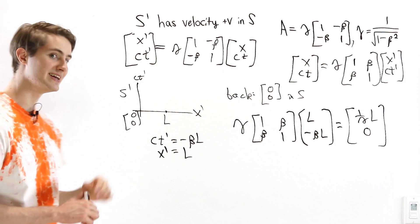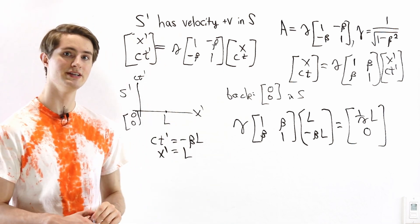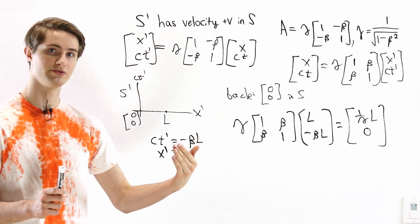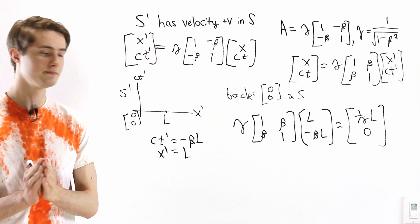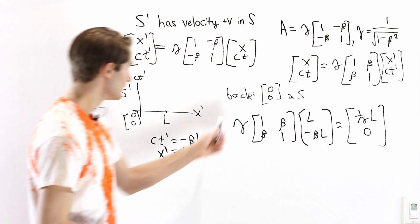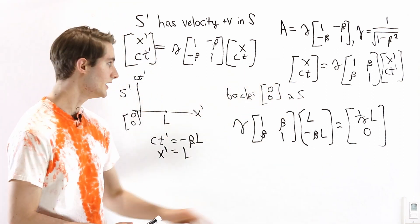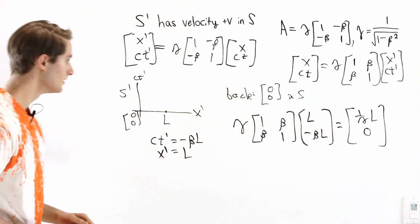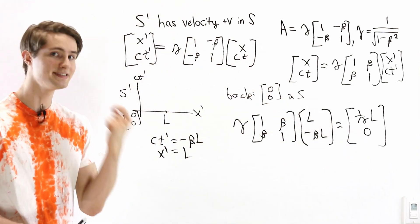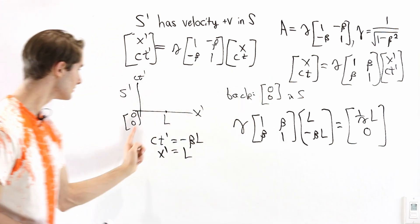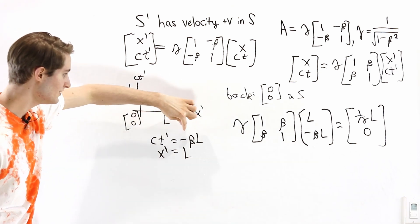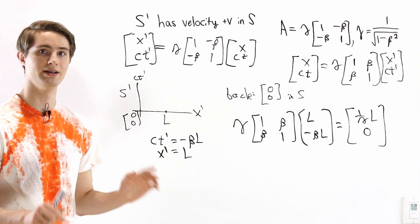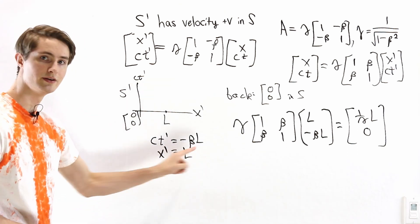One interesting thing we notice here is that at the same time we talk about length contraction, we have to talk about the relativity of simultaneity. The relativity of simultaneity means that two events that are at the same time in one reference frame might not be at the same time in another. The two events — the back of the object at 0, 0 in S and the front at 1 over gamma times L, 0 in S — are simultaneous with the same time coordinate. But if we look at the corresponding events in S', the back is still 0, 0, but the time coordinate of the front event is negative beta L, not 0. These two events were simultaneous in S but not in S' — the front end event happened earlier than the back end event.